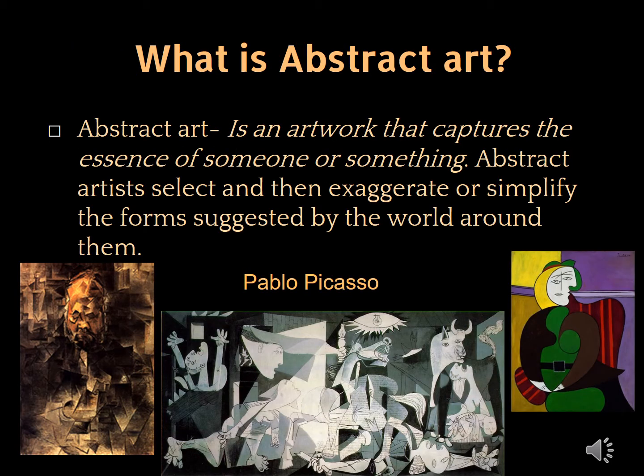Our next art form is Abstract Art. Abstract Art is artwork that captures the essence of someone or something. Abstract artists select and then exaggerate or simplify the forms suggested by the world around them. With examples of Pablo Picasso's paintings, we are able to recognize what he has painted, but they are exaggerated and simplified. His cubism portrait still shows a recognizable man. In Guernica, we recognize animals, objects, and people, though exaggerated and simplified. In Woman Sitting in Chair, he simplified the woman and chair into simple shapes.